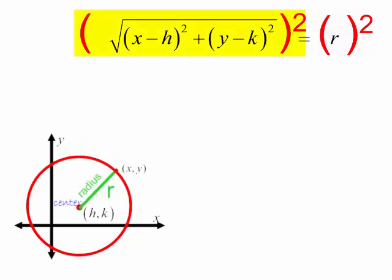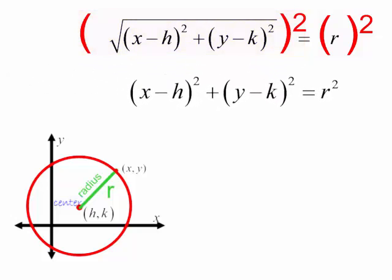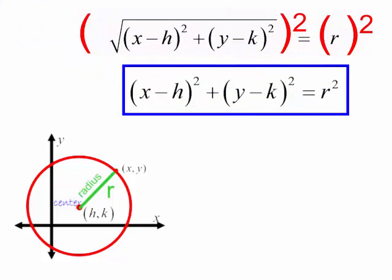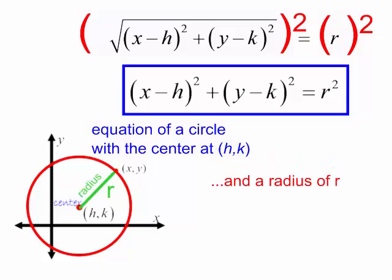Now let's do a little math. The left side has a radical, so I am going to square both sides in order to eliminate that radical. Whatever you do to one side, you have to do to the other. When I square a square root, they cancel, and when I square r, I simply get r squared. This is the equation of a circle with the center at (h, k) and a radius of r.